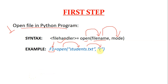Using 'r' mode means we are going to read data of this file only — we cannot write any data into students.txt. A few things to note about syntax: give any valid name to the file handler, then equals to, then use the open() function with parentheses. Inside double quotes write the name of the file, then a comma, then again in double quotes write the mode in which you want to open the file.